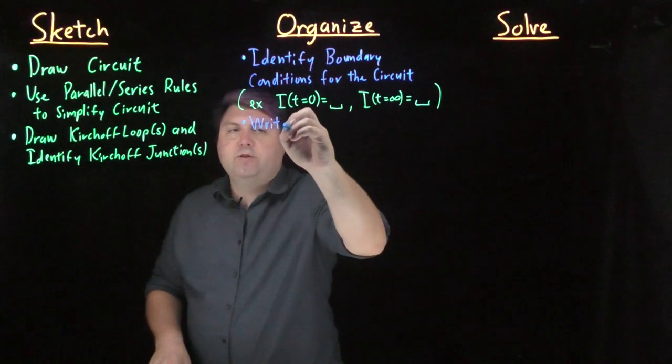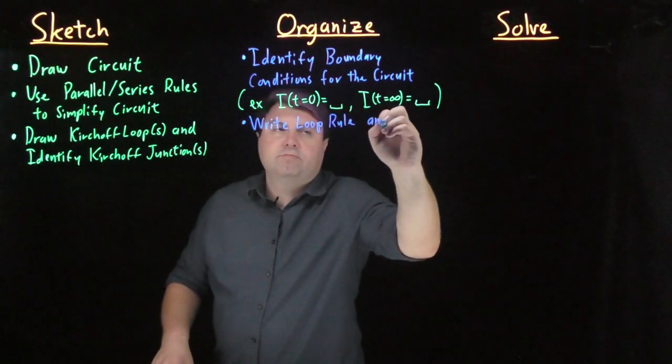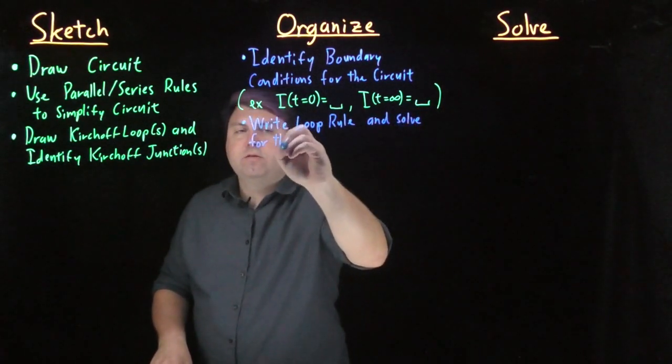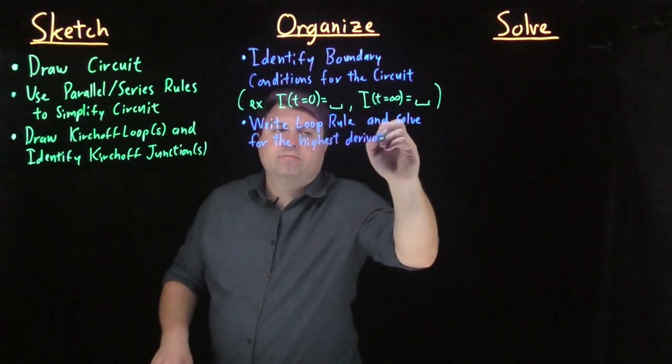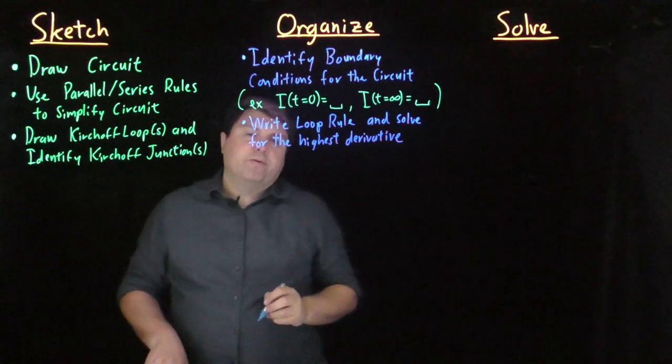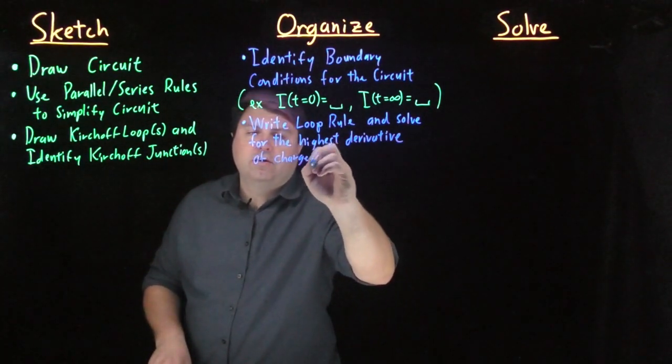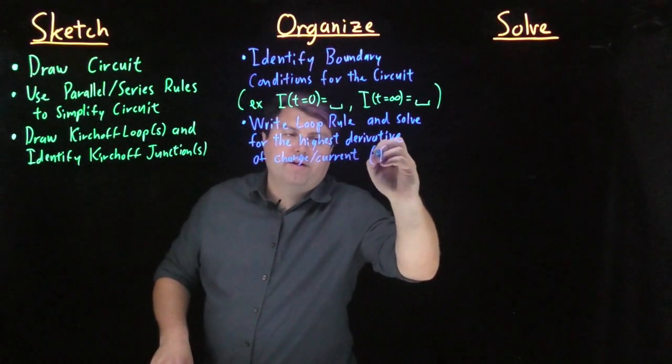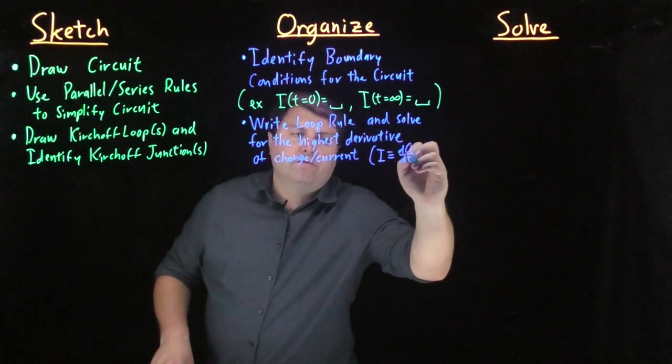And then we want to write the loop rule and solve for the highest derivative of whatever we're looking for, so of either charge or current, with a reminder that i is defined as the derivative dq dt.